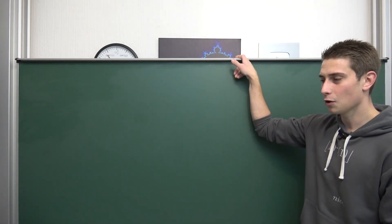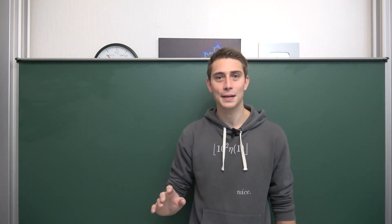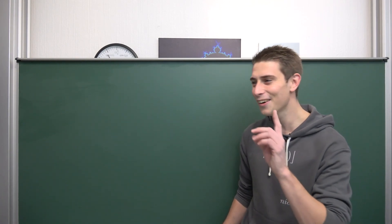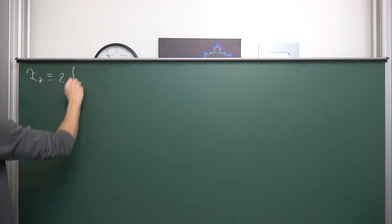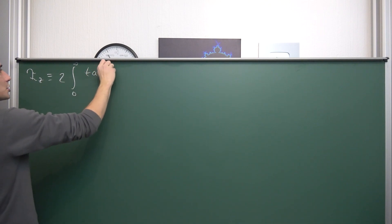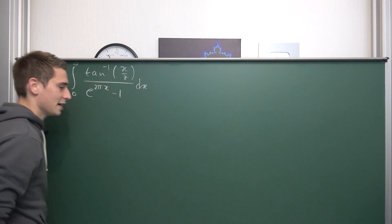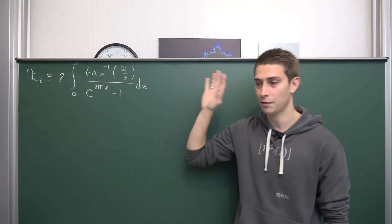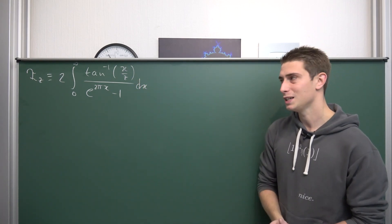Now we're going to dive right in. It's not easy to derive and the first person to derive it — Binet — probably had a bunch of luck coming up with everything here. So at first we're going to introduce a parameterized integral I with respect to z, defined as 2 times the integral from 0 to infinity of the inverse tangent of x over z, divided by e to the 2πx minus 1, integrated with respect to x.